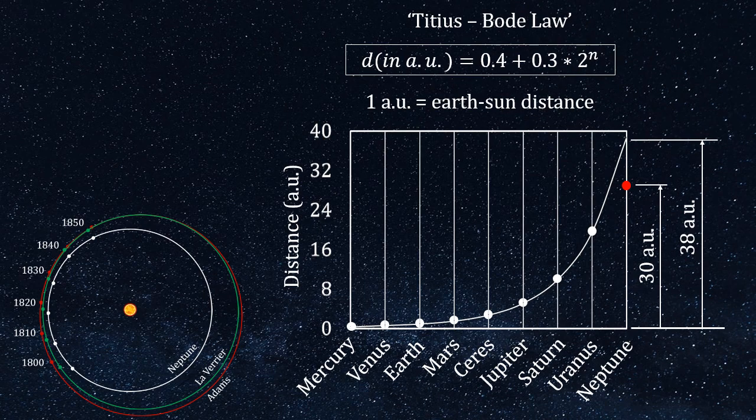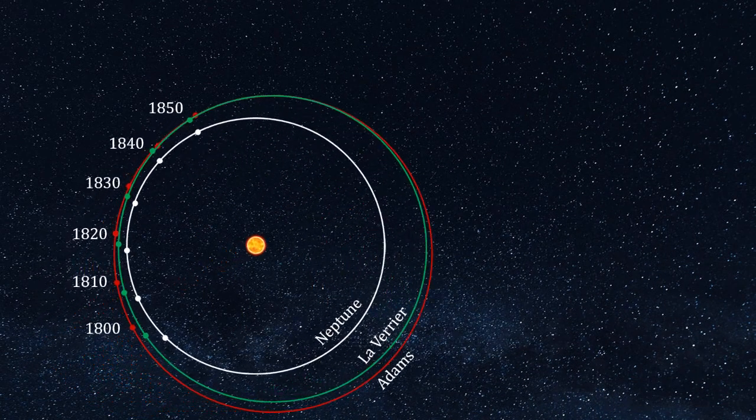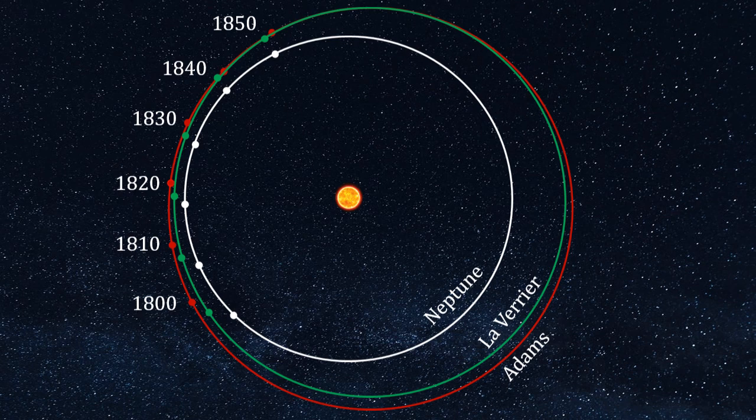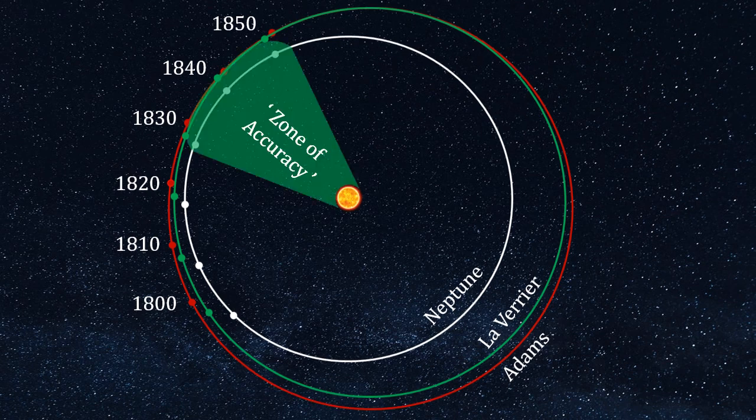Why did it fail? It failed because, after all, it was just that, a strange coincidence. However, notice how close the true orbit comes to the predicted orbit in the year of the discovery, 1846. It's within the zone of accuracy, so to say.